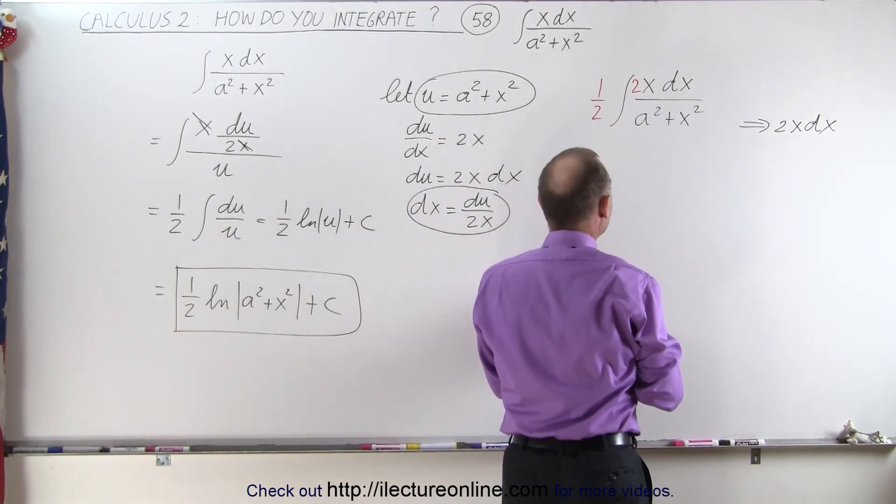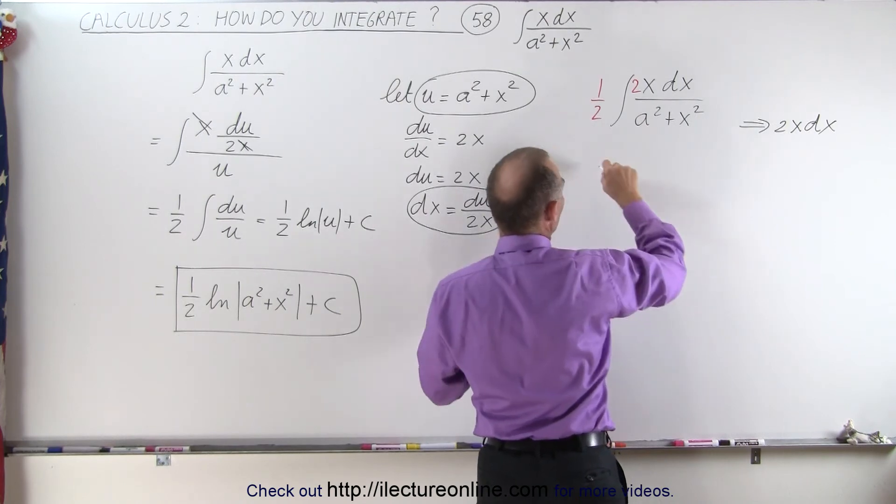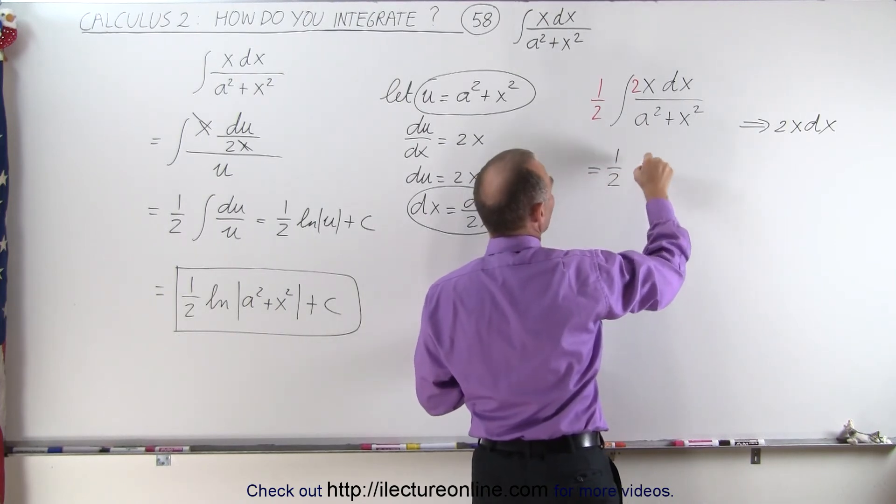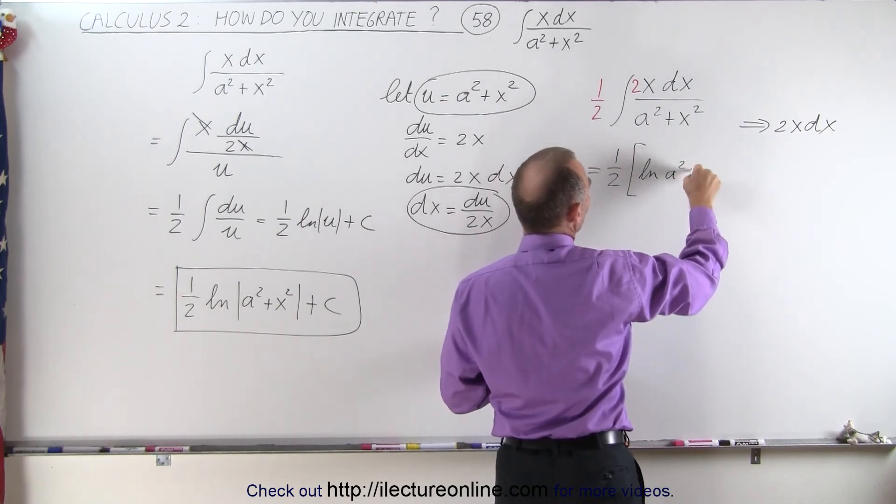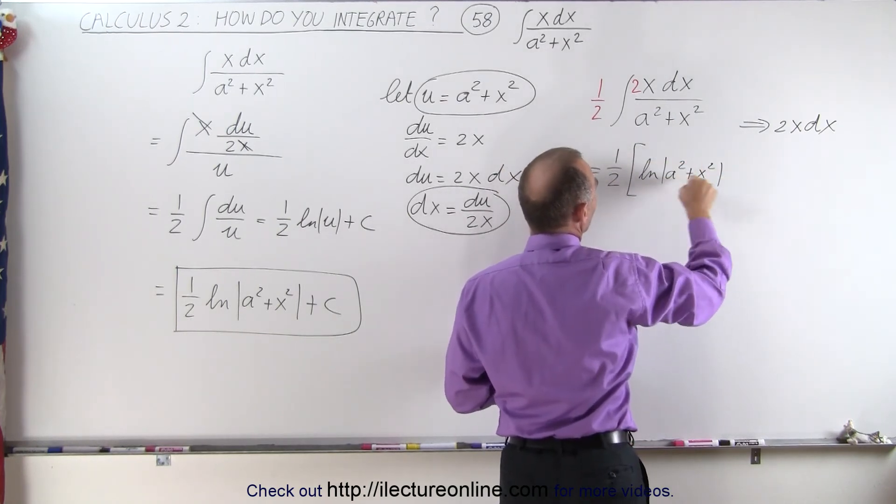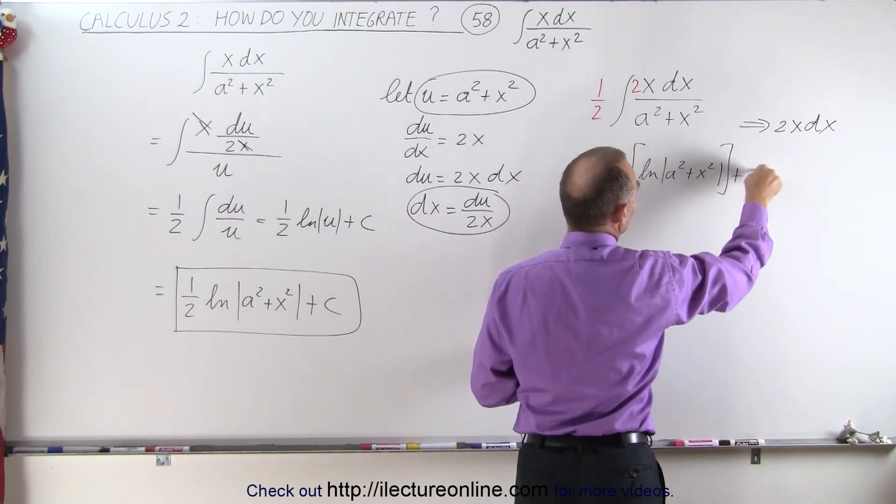So now I have a proper differential in the numerator, which now allows me to say that this can be solved by taking the natural log of that. So this can now be written as 1 half times the natural log of a squared plus x squared plus a constant of integration.